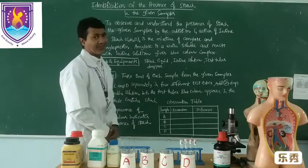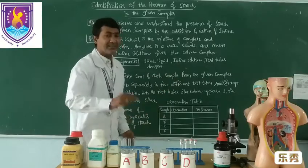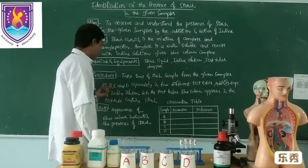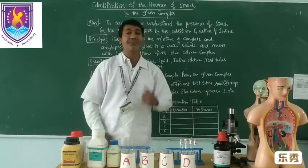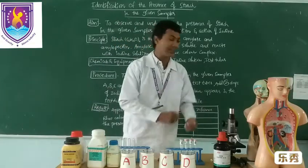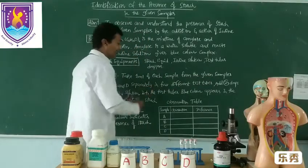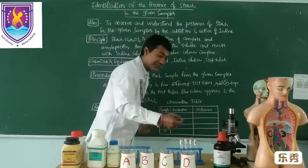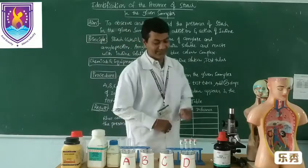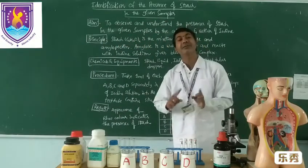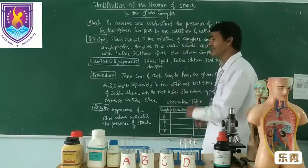Then the procedure — very simple procedure, my students. Take one amount of each sample from the given samples — A, B, C, and D separately into four different test tubes. Take sample A into test tube A, and so on. Then add two drops of iodine solution into each test tube. Blue colour appears in the test tube that contains starch. In whichever test tube turns bluish colour, it contains starch. That is the procedure.